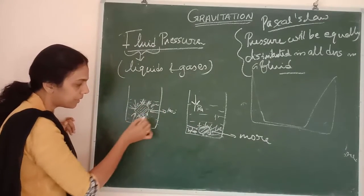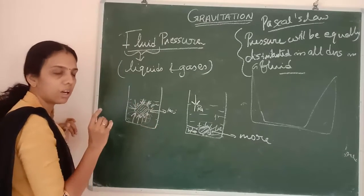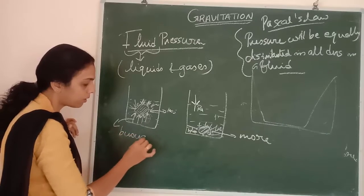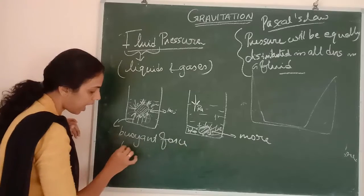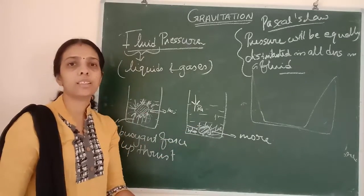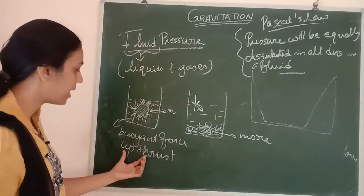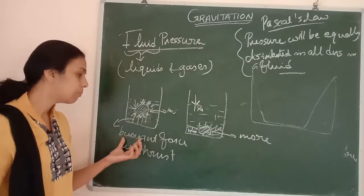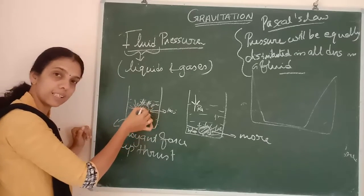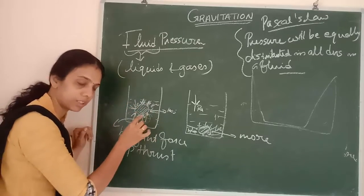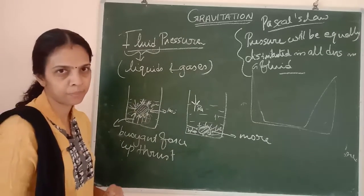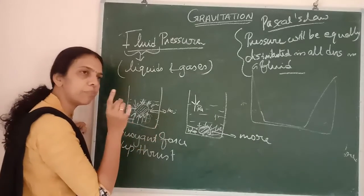An upward force is acting on all objects inside a fluid. That upward force acting on an object inside a fluid is called the buoyant force or upthrust. The upthrust depends on the number of particles per unit volume.